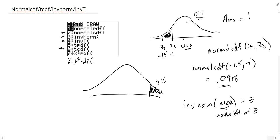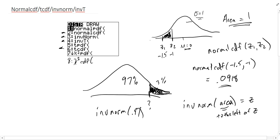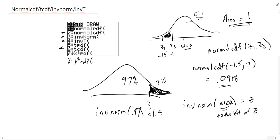If I want to find the z-score where 3% of values are in the upper tail, I need to feed inverse norm the area to the left. Since the total area is 1, if 3% is in the upper tail, then 97% is in the lower tail. So inverse norm(0.97) gives 1.88. That means 97% of values fall to the left of z = 1.88, and there's a 3% chance of getting something greater than 1.88.